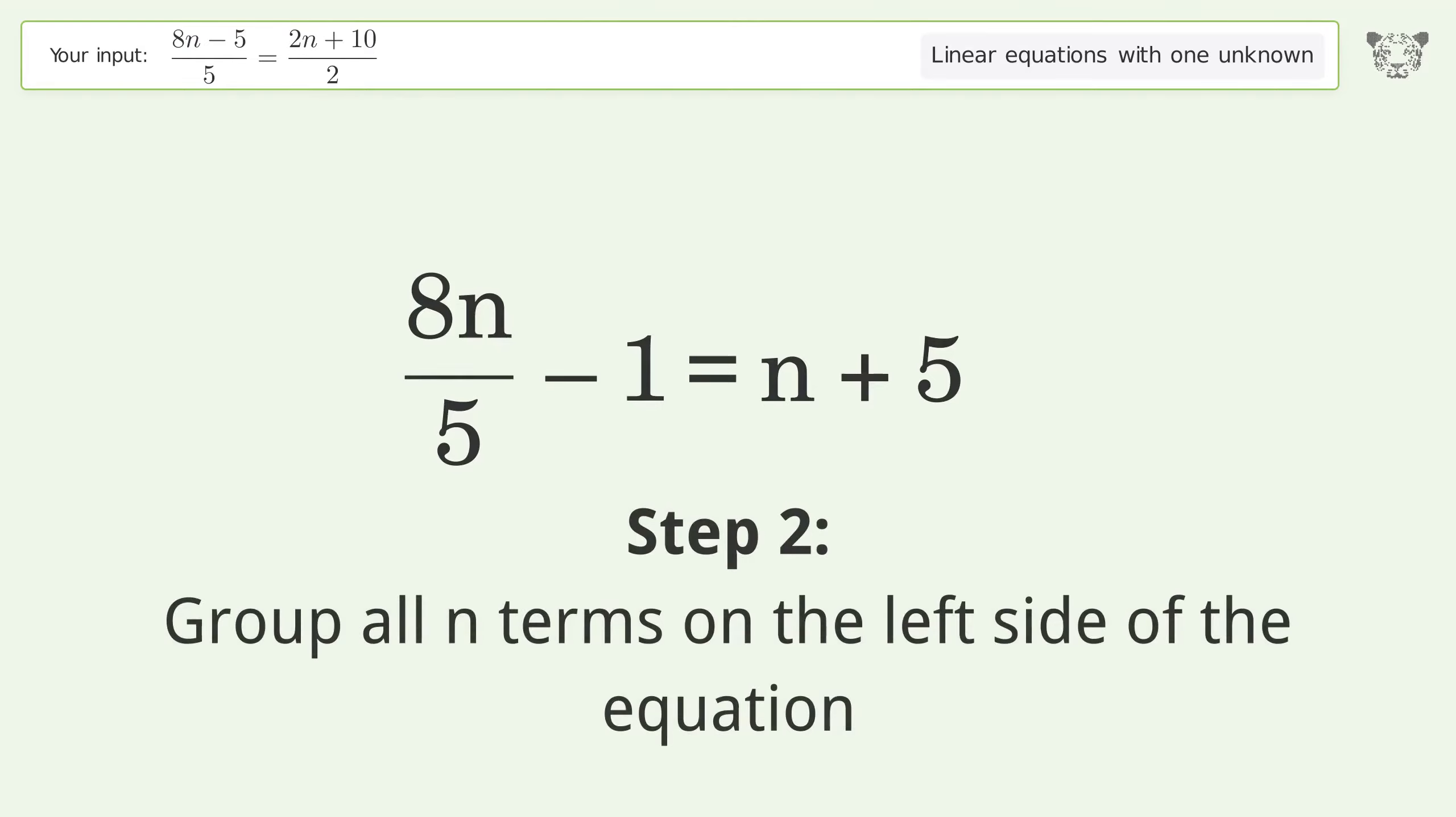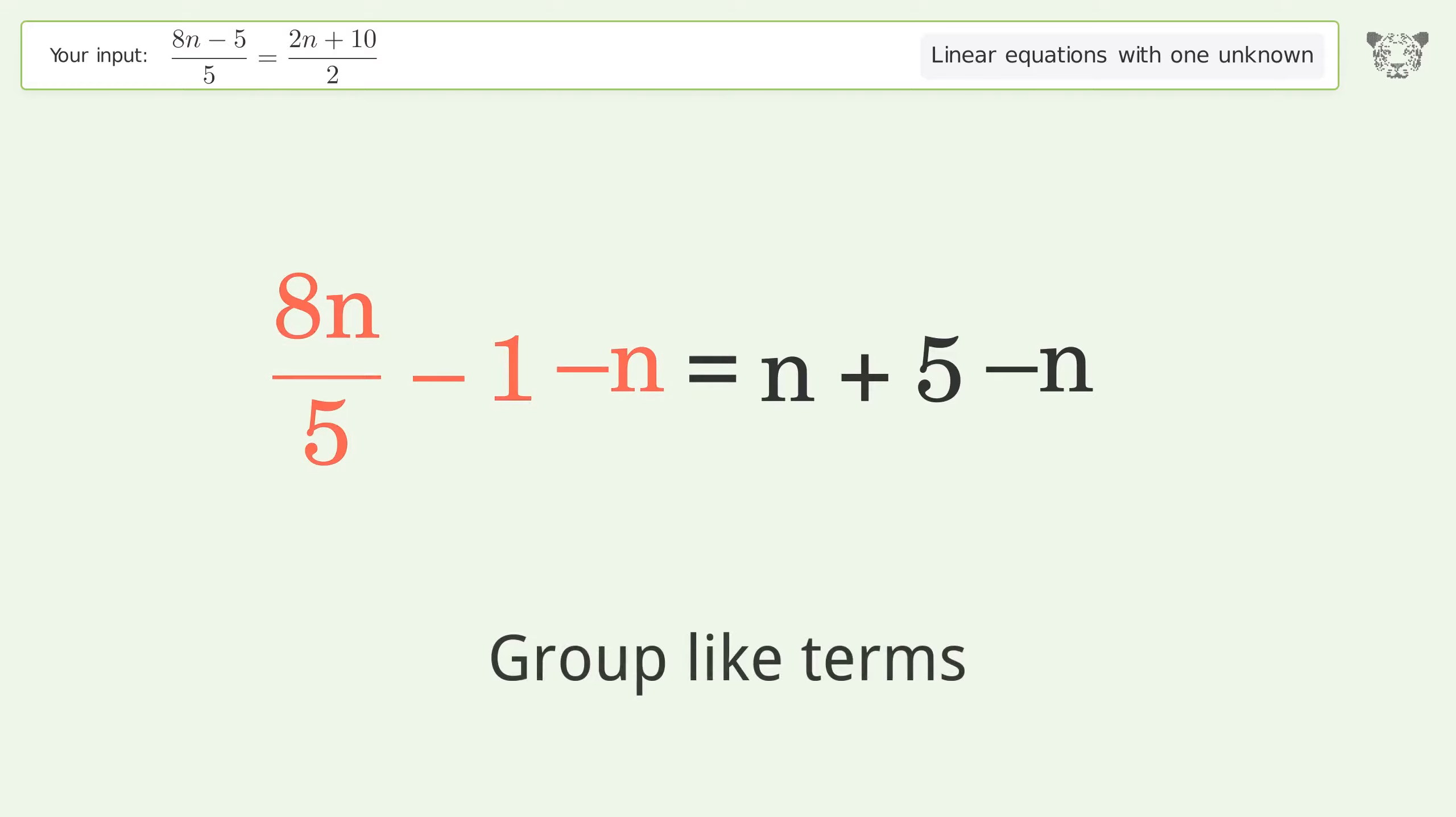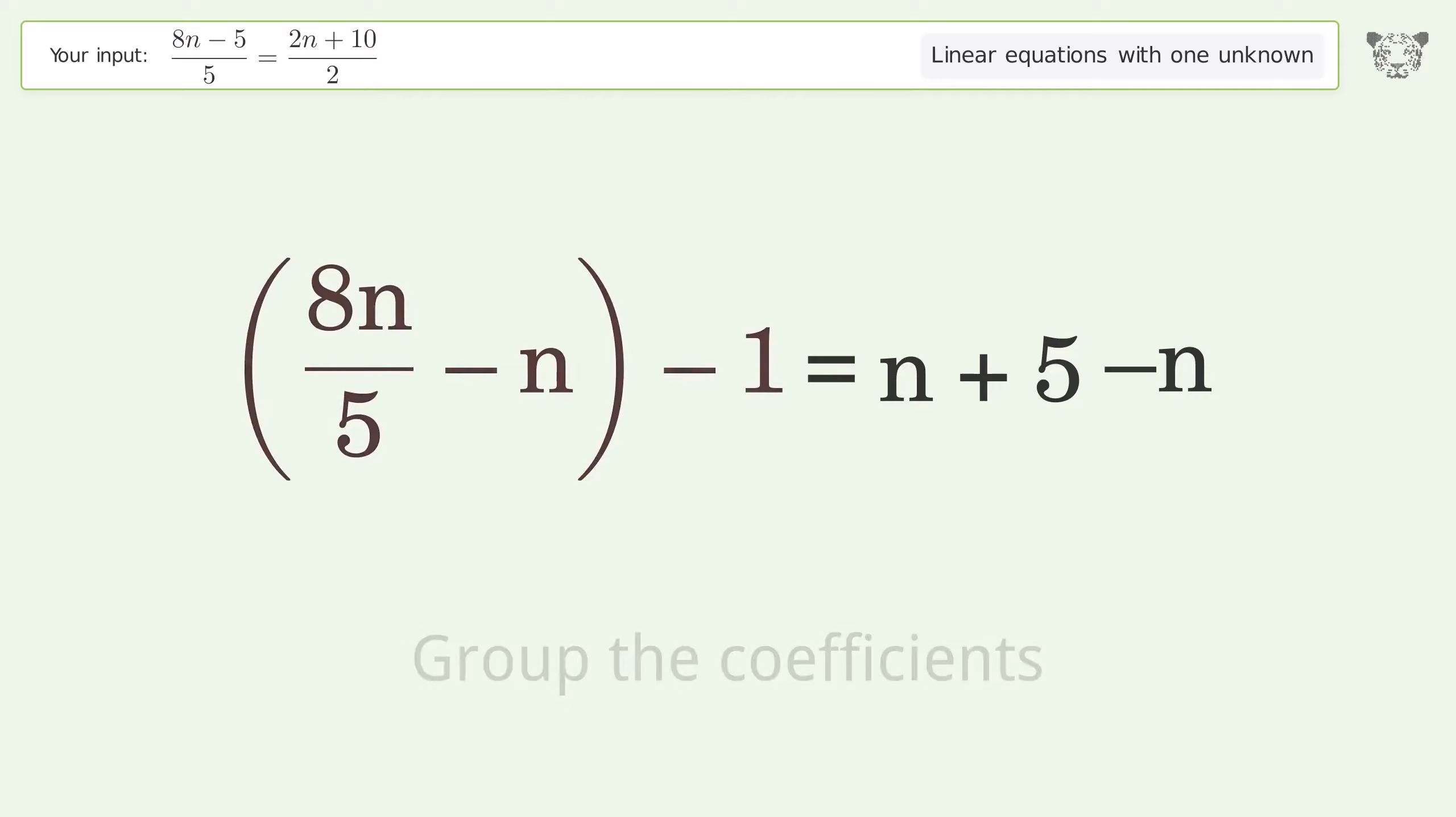Group all n terms on the left side of the equation. Subtract 10 from both sides. Group like terms. Group the coefficients.